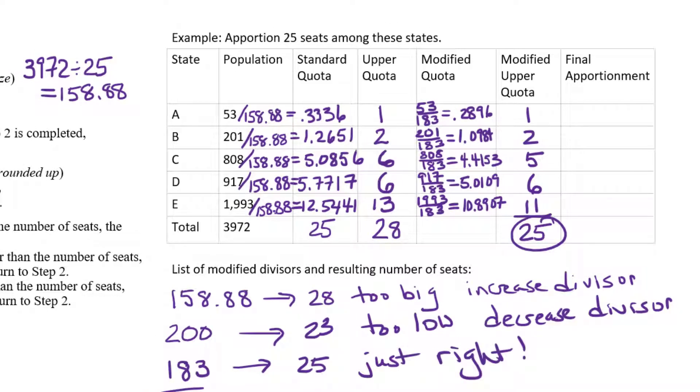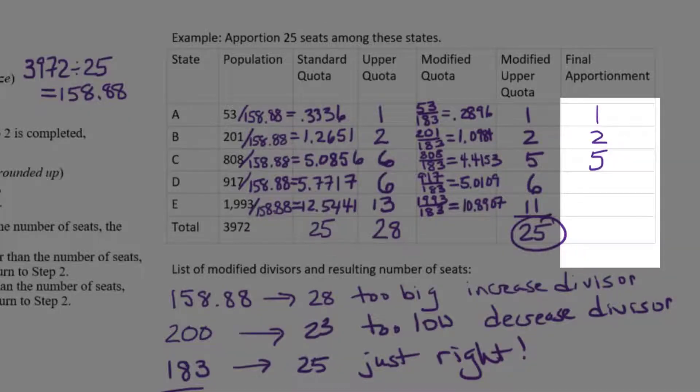Now there are different divisors that someone might have guessed that might have also resulted in 25. Maybe, I'm not sure, maybe 182 works. I don't know. But the important thing is just that we will always get the same final apportionment if we use this procedure. So our final apportionment is 1, 2, 5, 6, and 11.